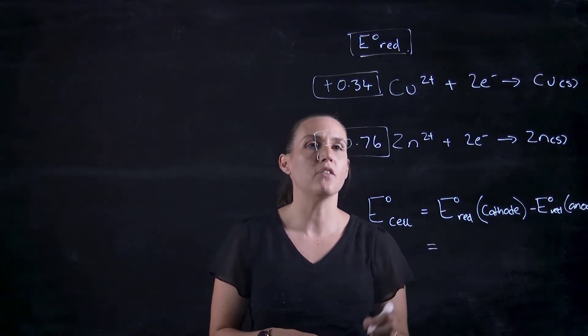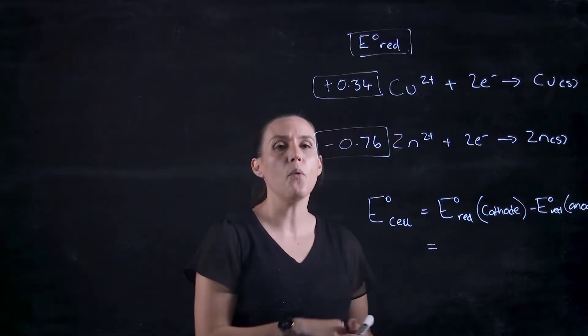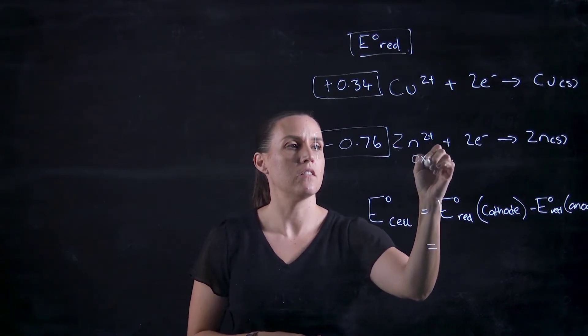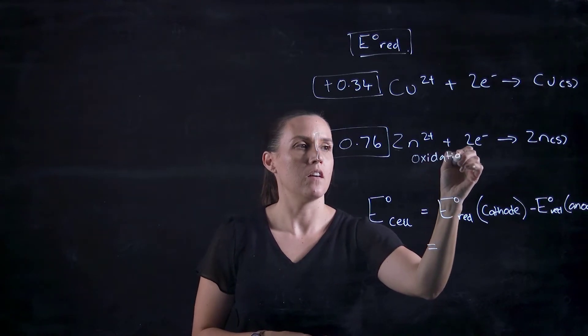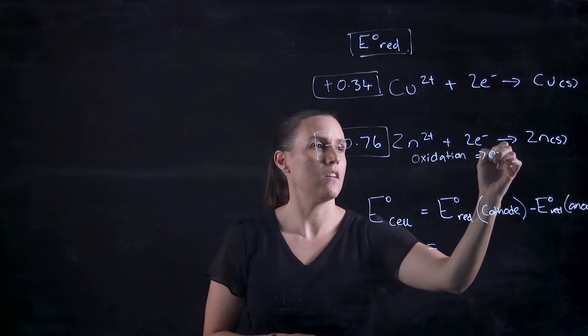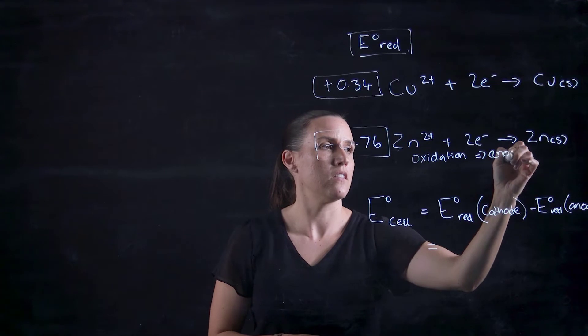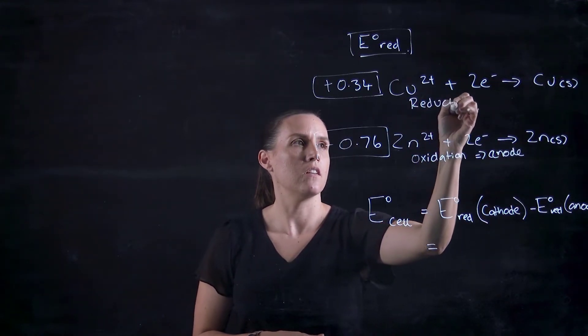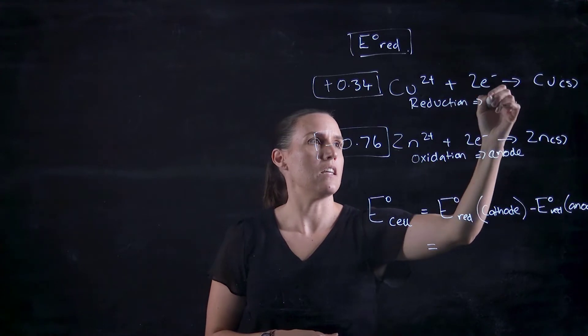When we're looking at zinc and copper, the zinc is the oxidation which is the anode, and the copper is the reduction which is the cathode.